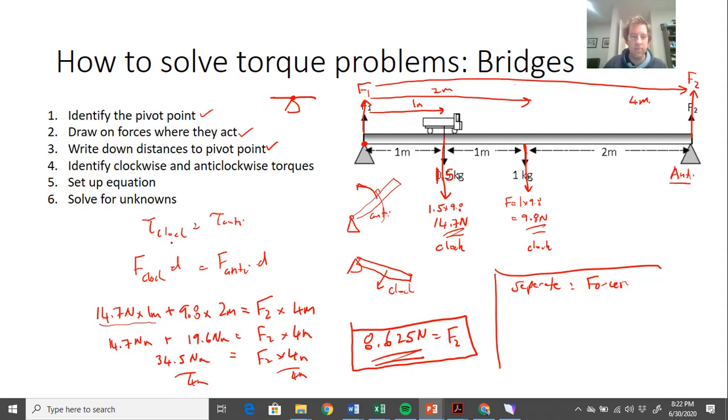The other thing I can do is set up a separate equation and just deal with the forces. Here I dealt with the torques, now I'm going to deal with the forces. In this case, I know the down forces equal the up forces because the bridge doesn't move. So my down forces are 14.7 newtons plus 9.8 newtons. My up forces are F1, which I don't know, plus 8.625.